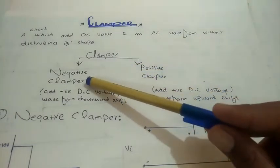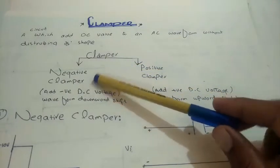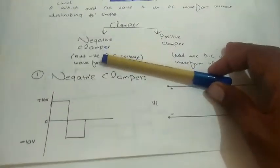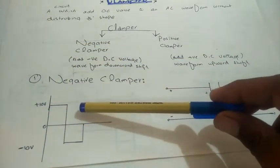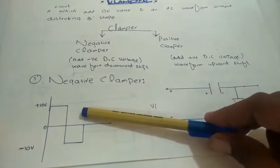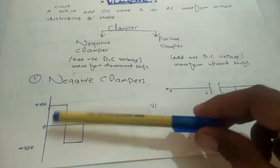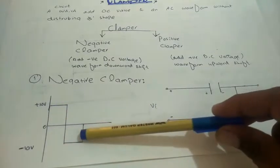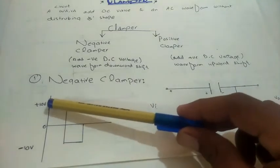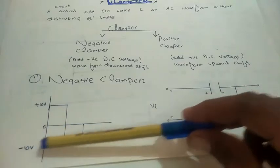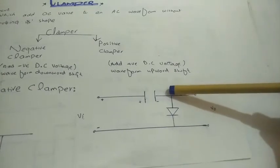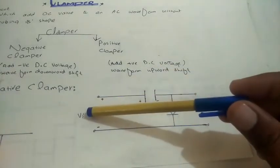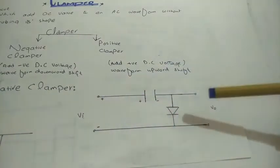Let us start with the negative clamper. We will discuss the negative clamper circuit. Here you can see the waveform - a rectangular waveform. We have a positive cycle of positive ten volts and a negative cycle of negative ten volts. Here you can see the circuit - this circuit is a clamper circuit with input and output.